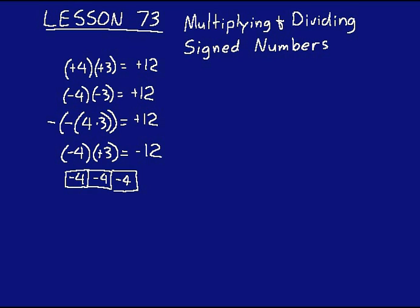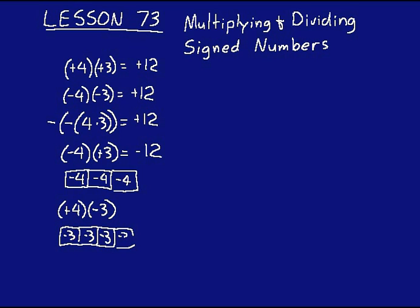If you had positive 4 times a negative 3, just think of that. You could have four groups of negative 3 each. And so you have, again, a negative 12.